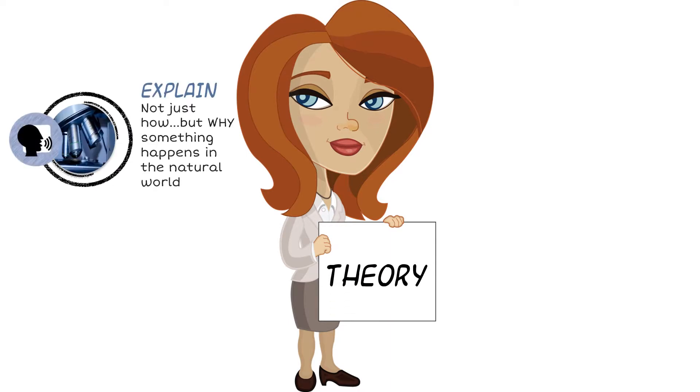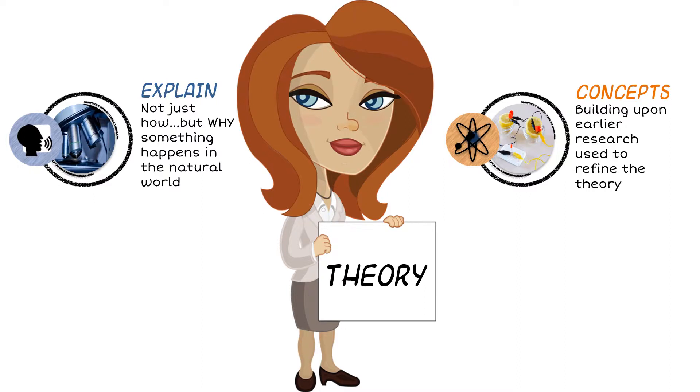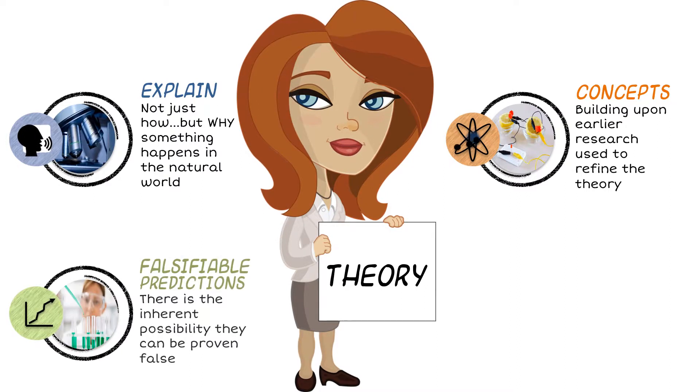Theories explain why something happens, build understanding of concepts from research to refine the theory when new evidence is found, and set clear boundaries that would prove the theory false. A quick example from our playful baby: if gravity is not existent, then when the plastic toy duck is dropped it would float up to the sky instead of fall down and be an observation to prove his prediction false.